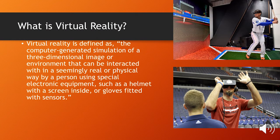So what is virtual reality? Virtual reality is defined as the computer-generated simulation of a three-dimensional image or environment that can be interacted with in a seemingly real or physical way by a person using special electronic equipment, such as a helmet with a screen inside or gloves fitted with sensors.